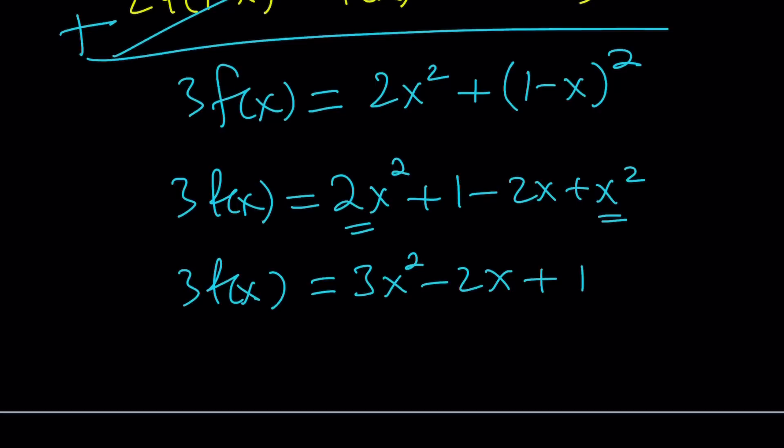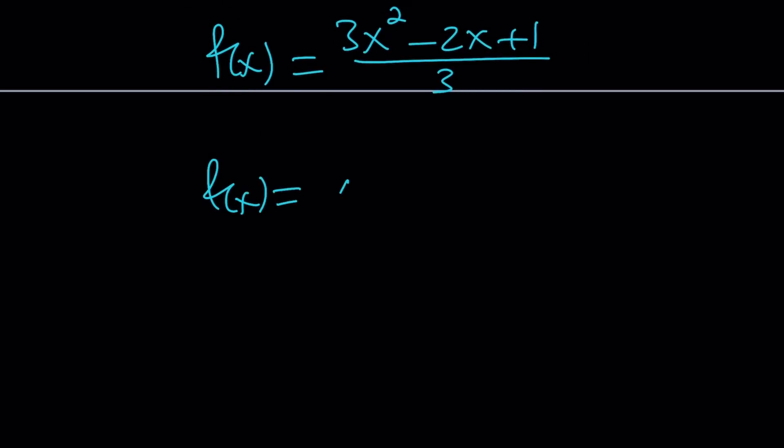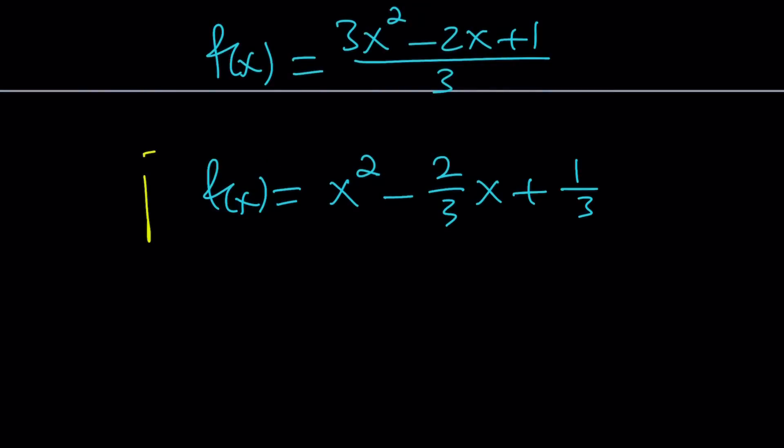And remember, we were looking for an expression for f(x), so we can divide both sides by 3. That's going to give us an expression for f(x). Obviously, you can also split it up and write it more like a polynomial: x² minus 2/3 of x plus 1/3. All of these forms are fine, but I think the last one is the simplest or preferred.